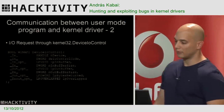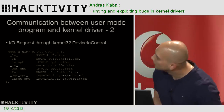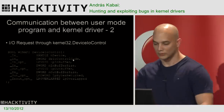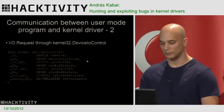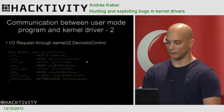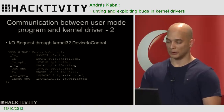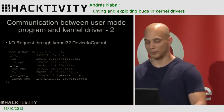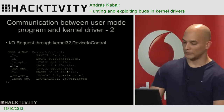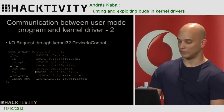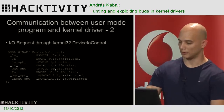DeviceIoControl requires several parameters. The most important are the IO Control Code, the input buffer pointer and its size, and the same for the output buffer. In some cases, especially with Method Neither, we will manipulate these pointers — I'll talk about that later.